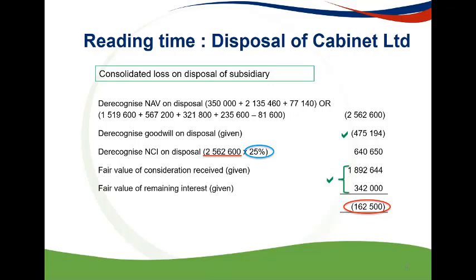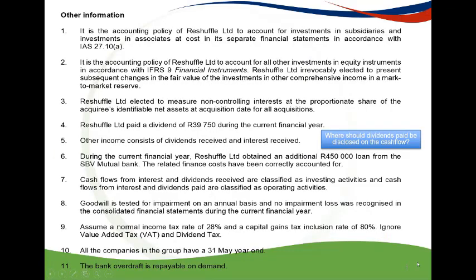It is important to note that this item is a non-cash item that is adjusted for under operating activities. The manner in which disclosure in operating activities should be presented would depend on which method of disclosure was required — the direct or the indirect method.